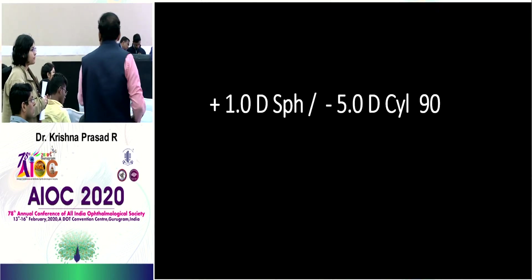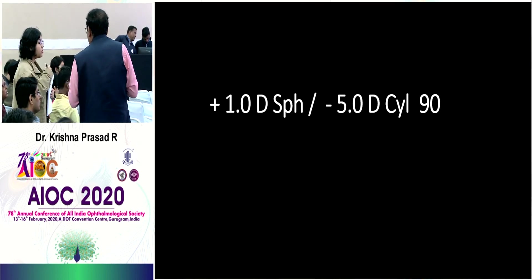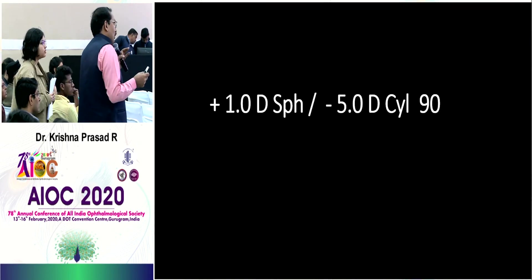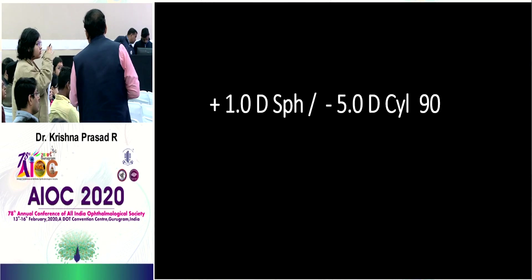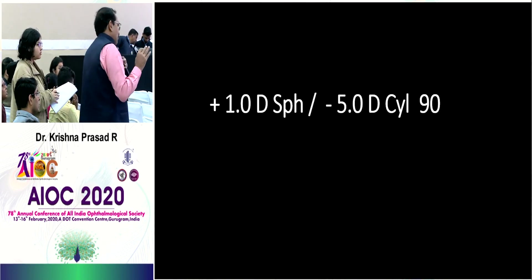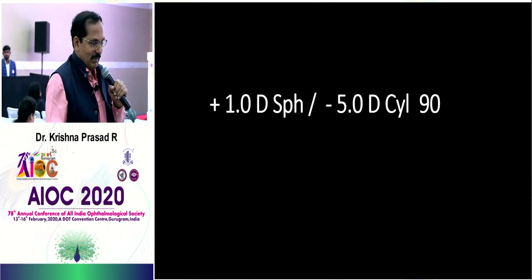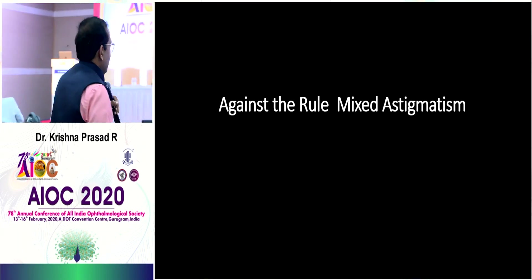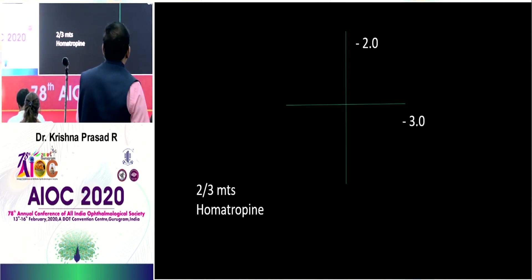What is the type of astigmatism? Both meridia should be of the same sign for compound — but here they are not, so it's mixed astigmatism. Is it with the rule or against the rule? Minus at 90 — that is against the rule.